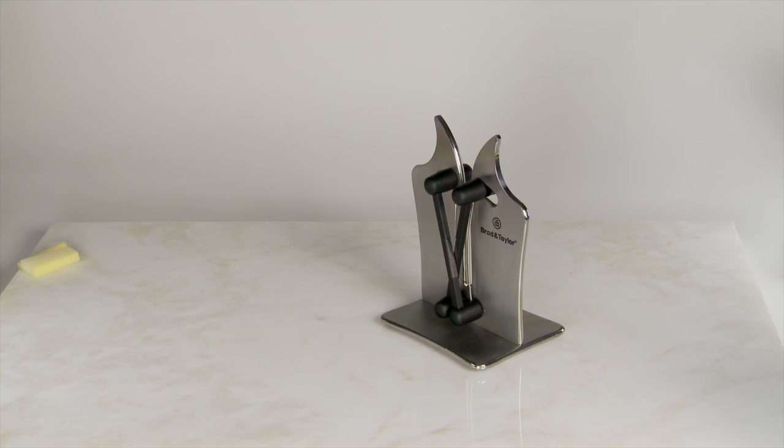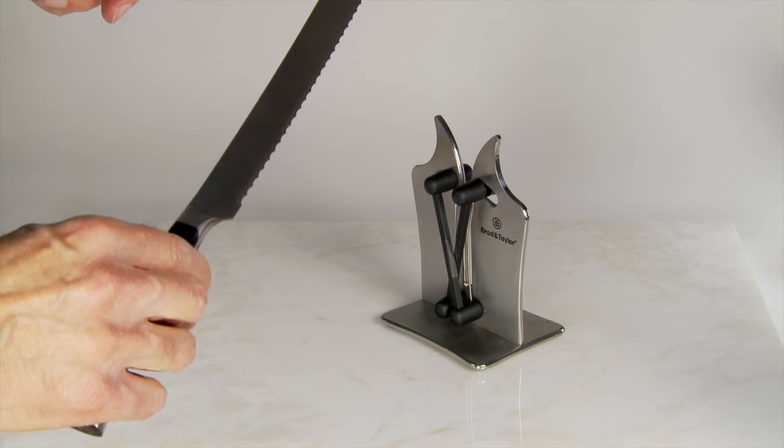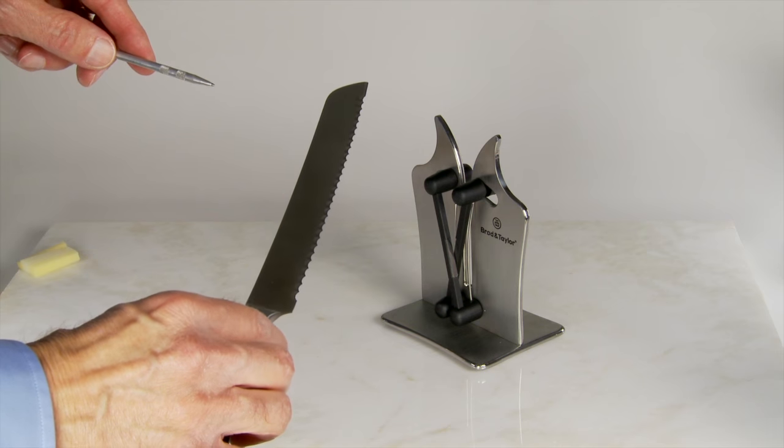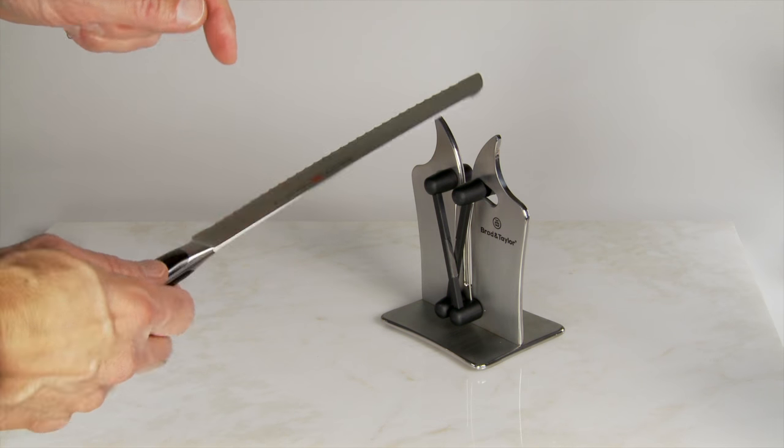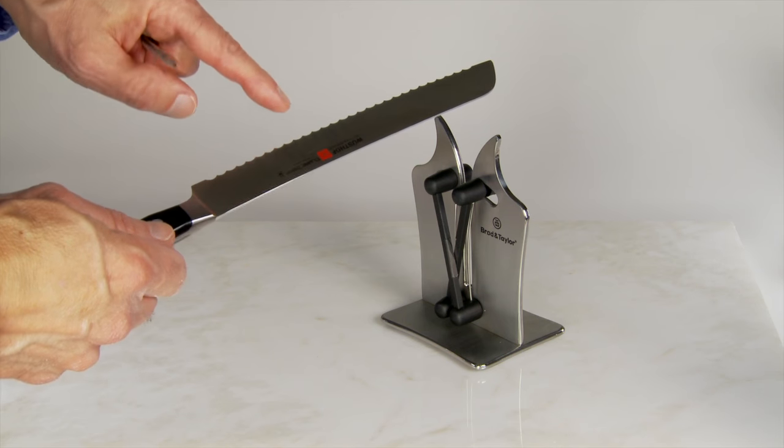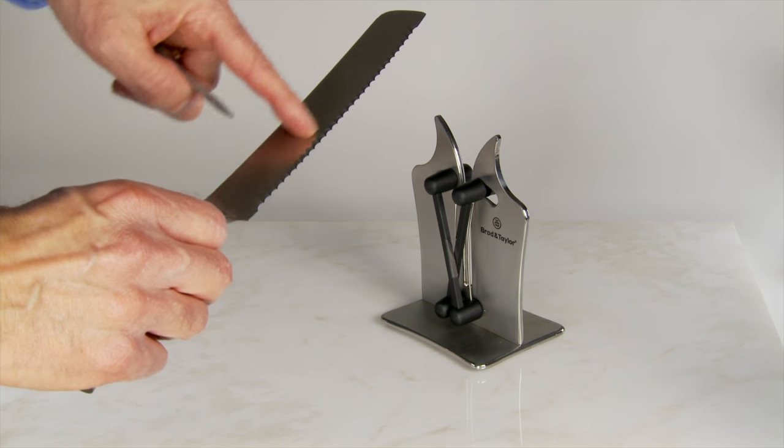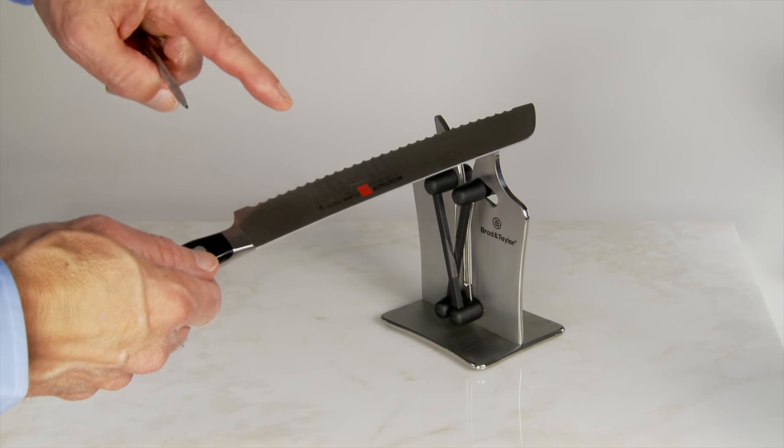Another great feature of the Broad & Taylor Sharpener is how easy it is to sharpen serrated knives. This is a difficult task, and most people at home never have the ability to sharpen these knives at all. Now, as you may know, the great majority of serrated knives are beveled only on one side, almost always on the right, and the left side of the blade is flat.